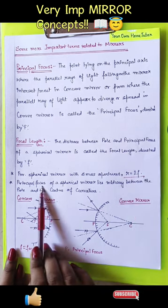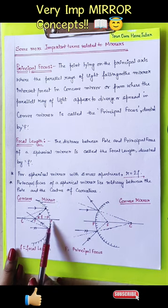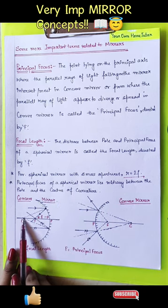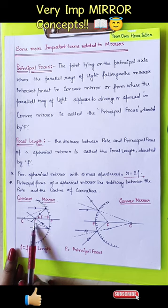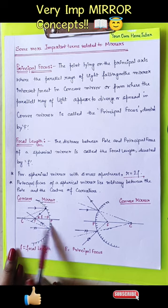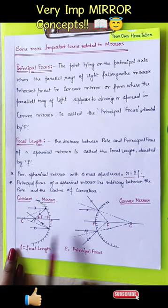The principal focus of a spherical mirror always lies between the pole and the center of curvature. You can see here, F is lying between P and C in both the cases.